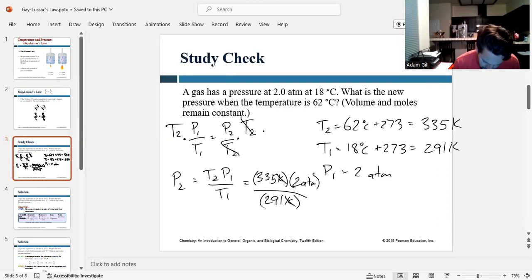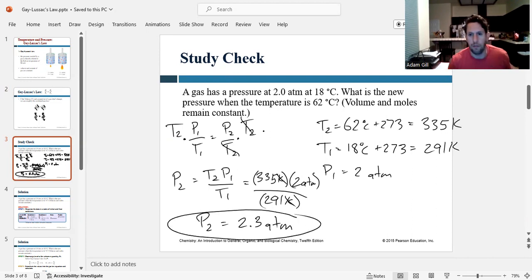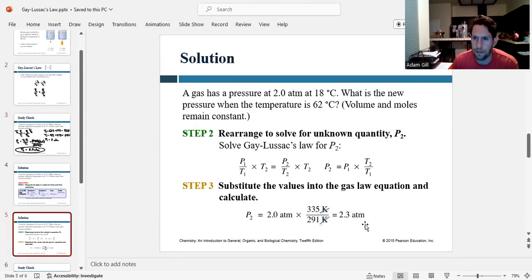Kelvin cancels, leaving us just atmospheres. And so 335 times 2 divided by 291, I get 2.3 atmospheres, which makes sense because they're increasing temperature. So you expect the pressure to also increase. And it looks like we did it right.